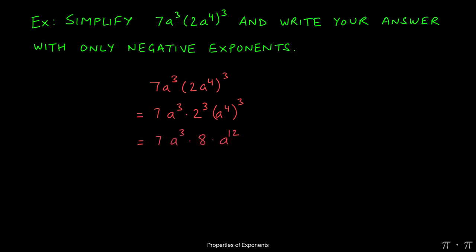At this stage we can simplify 2 to the third to 8. a to the fourth raised to the third power, because we have a power raised to another power we would multiply the two of them. So that will give us a to the twelfth.